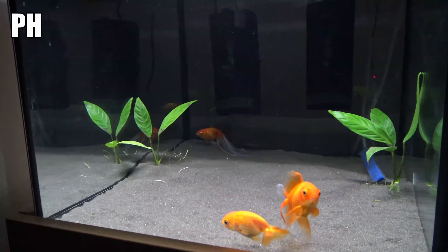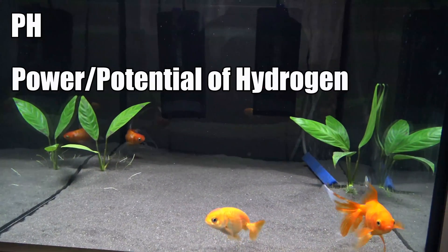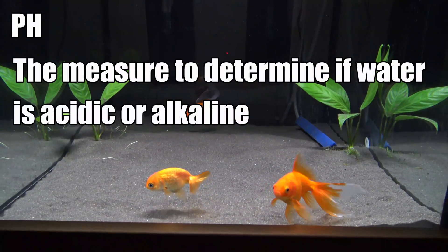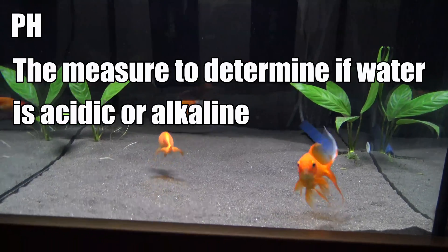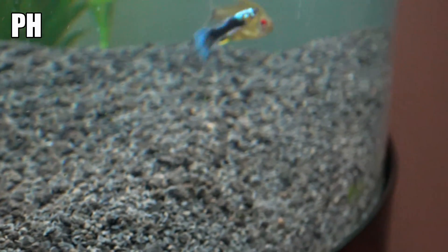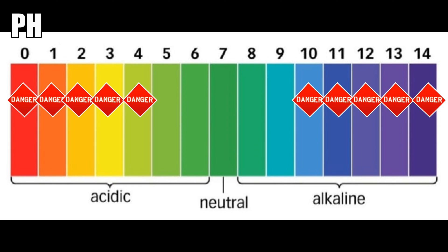pH stands for power or potential of hydrogen, and simply put it's a measurement of your water to determine if your aquarium is acidic or alkaline. The pH scale ranges from 0 to 14 with 7 being neutral. Below 7 is classed as acidic and over 7 is classed as alkaline. pH is important as if your water is too acidic or alkaline for your fish, this can harm them and make them susceptible to stress and disease.